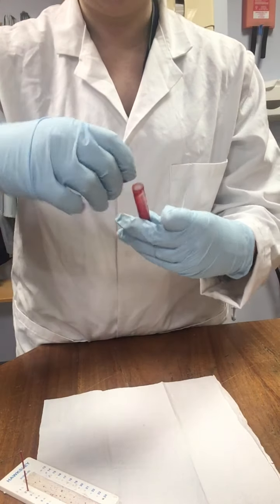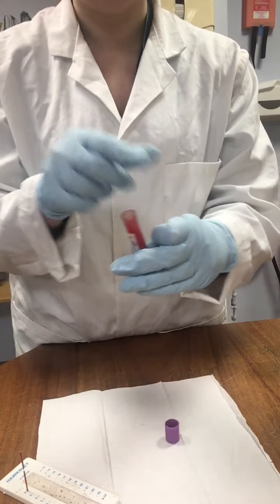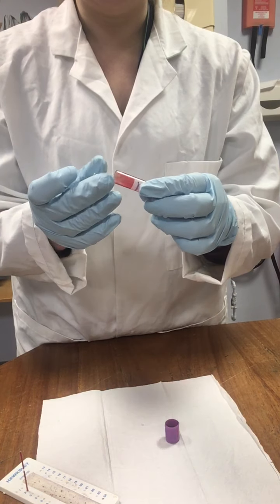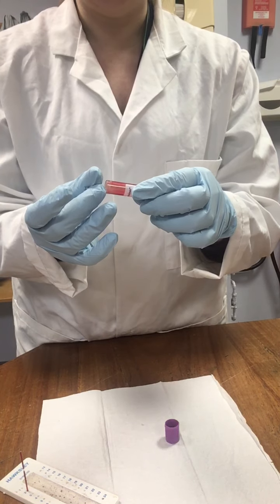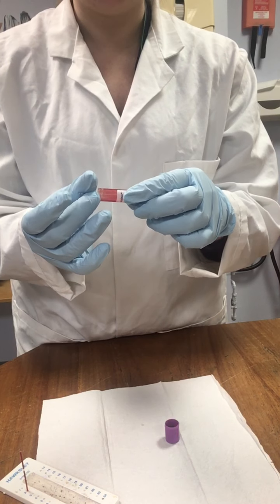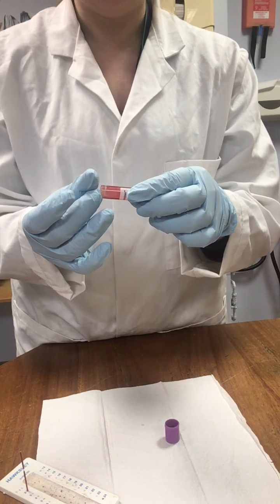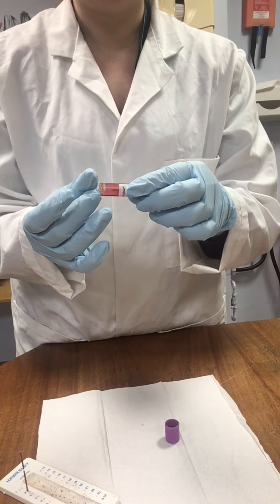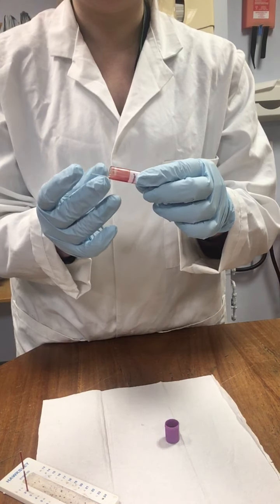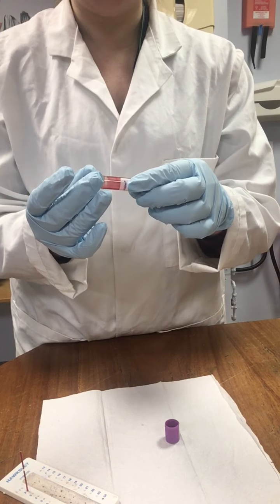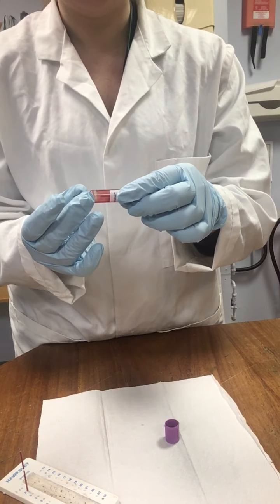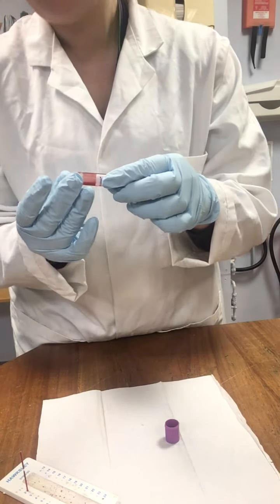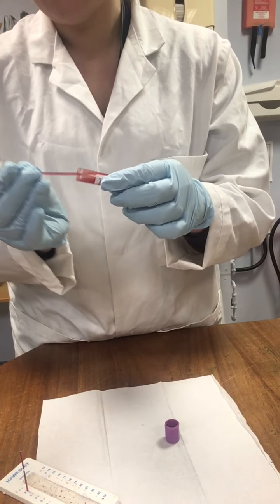So, taking the lid off the sample, again, be careful not to contaminate yourself or your workbench. We're going to place it into our blood tube and just wait a little bit of time, but it's relatively quick for our blood to migrate up the tube. A couple more seconds. It's coming up nicely. There we go.